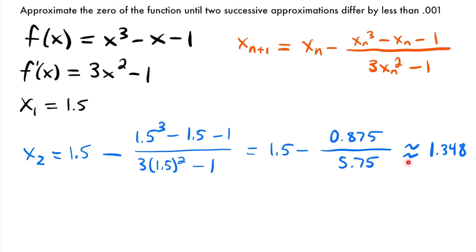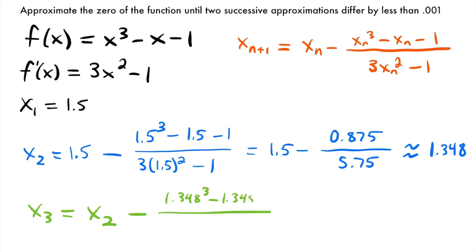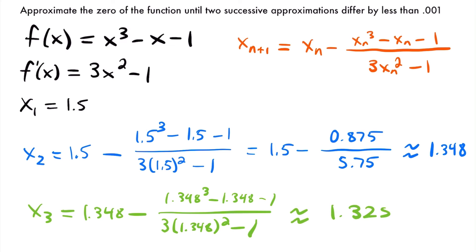Now that x2 is approximately 1.348, we can find x sub 3. So x sub 3 equals 1.348 minus (1.348 cubed minus 1.348 minus 1) divided by (3 times 1.348 squared minus 1). Plugging this into a calculator, x sub 3 is going to be equal to 1.325 — an even better approximation of what our x-intercept is going to be.